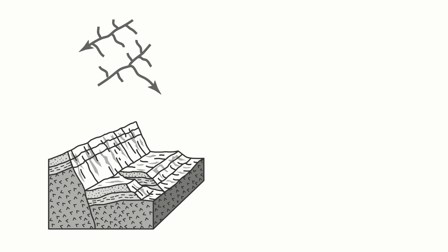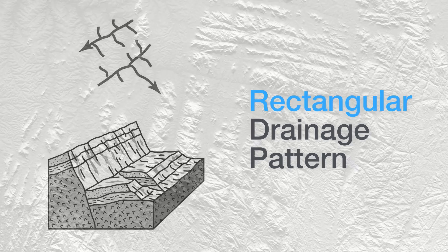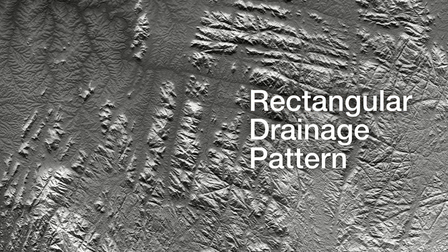When we have more unique landscapes, like faulted and deformed bedrock — which would be classified as a mountain — we might see something like a rectangular drainage pattern, in which we have parallel streams and rivers with smaller tributaries feeding them. Here's what this might look like from space.